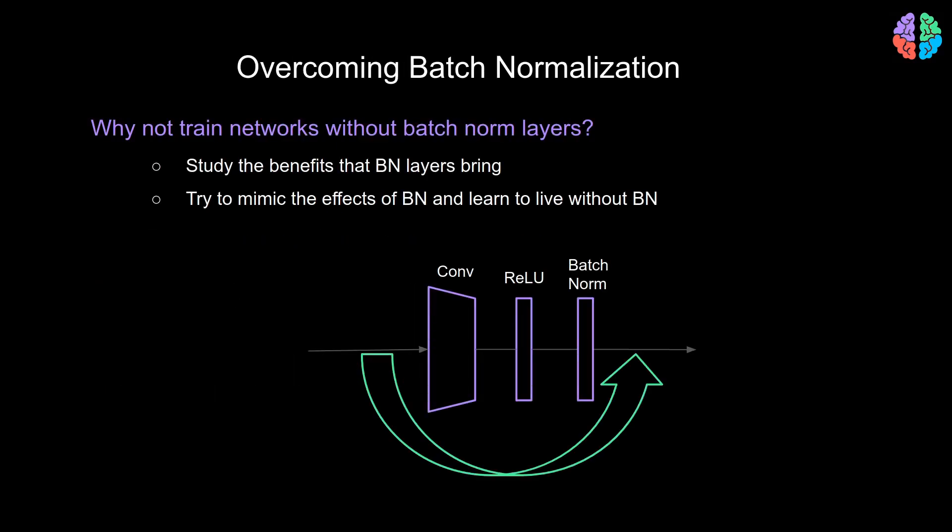Now that we know the drawbacks of batch norm layer, the question is, can we not get rid of the batch norm layer and simply use the conv and relu layers? For this to happen, we need to first study the benefits that the batch norm layers bring. Once we understand the benefits of batch norm, we can try to mimic the characteristic of the layer, either in some other layers or we can even introduce novel layers that replace the batch norm and act as the batch norm layer, but not exactly the batch norm layers. So let's first look at the four benefits of batch norm layers before we try to mimic them.